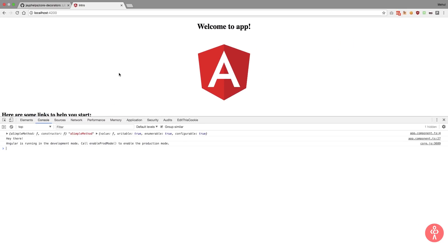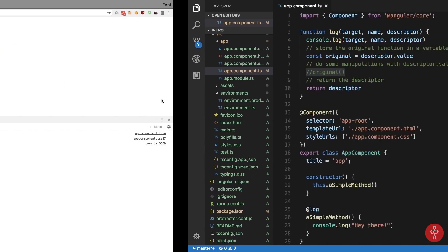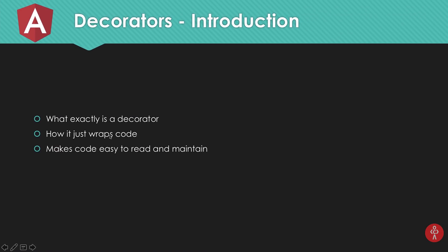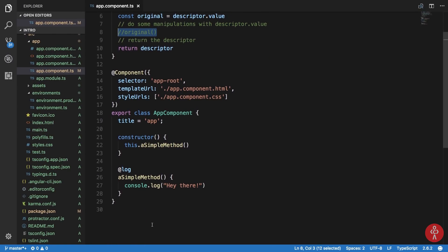Moving back to the slides — a decorator just helps you wrap a function or class inside another function that does some useful stuff and returns the original. We're going to look at an example of how it wraps code and makes it easier to read and maintain. If you create a 'log' decorator that logs all the arguments and result of a function, you can use it anywhere.